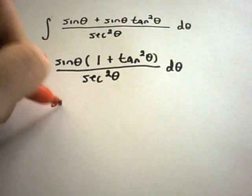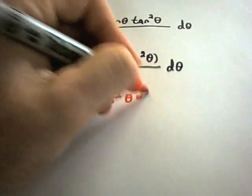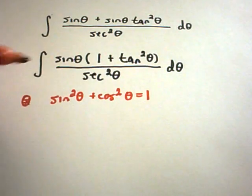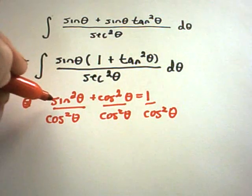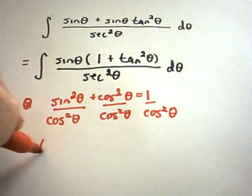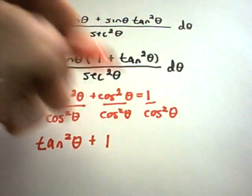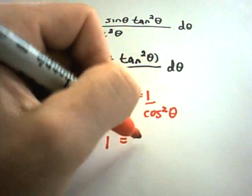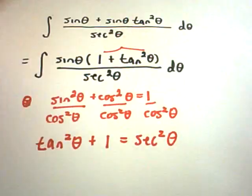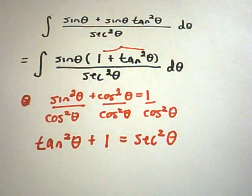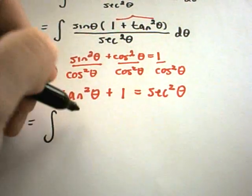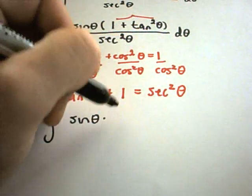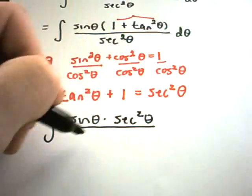Recall that sine squared theta plus cosine squared theta equals 1. If you divide everything by cosine squared theta, you get tangent squared theta plus 1 equals secant squared theta. That is exactly what appears in the numerator. So if you don't know your trig identities you'll run into a lot of problems with integration, because recognizing a trig identity is often the key trick. Here, 1 plus tangent squared is the same as secant squared theta, which cancels with the secant squared in the denominator.